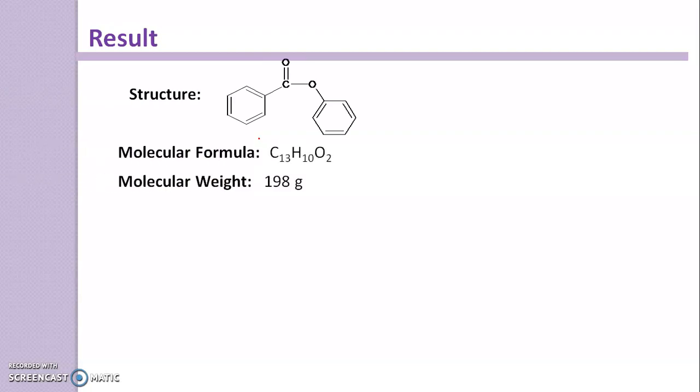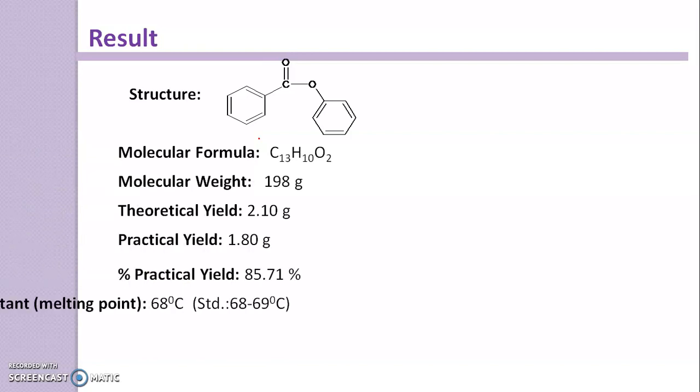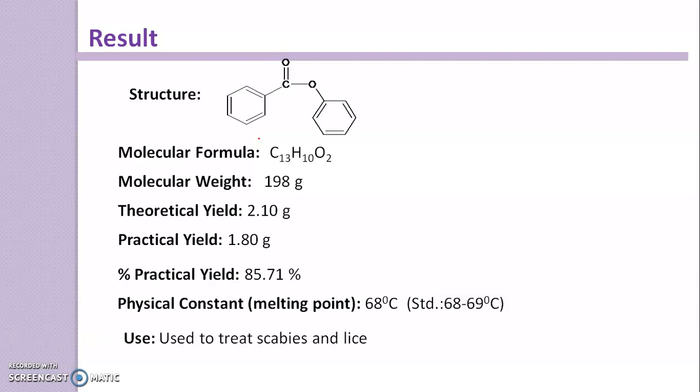Write down the result: product name phenylbenzoate, its structure, molecular formula C13H10O2, molecular weight 198 grams, theoretical yield, practical yield, percent practical yield, and physical constant (melting point) with standard. Write down the observed melting point as well as the standard. Use: This phenylbenzoate is used to treat scabies and lice.